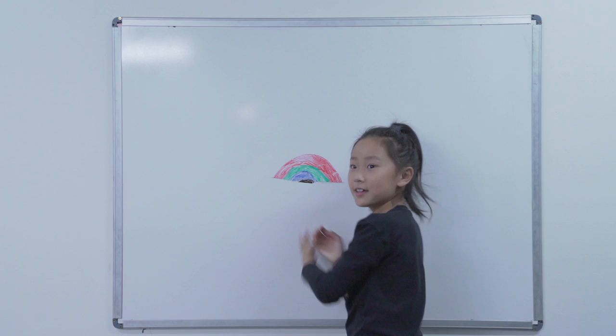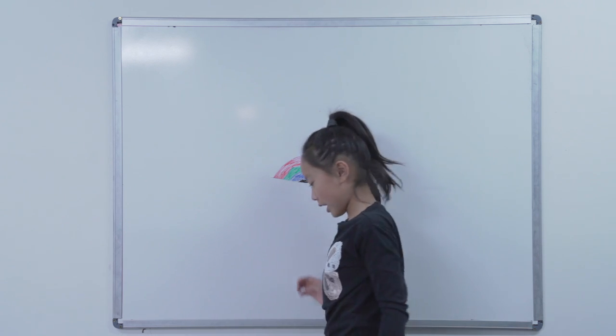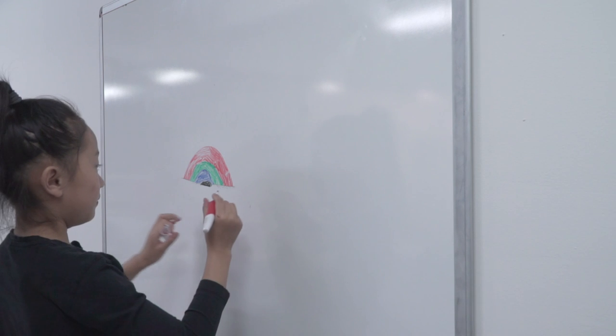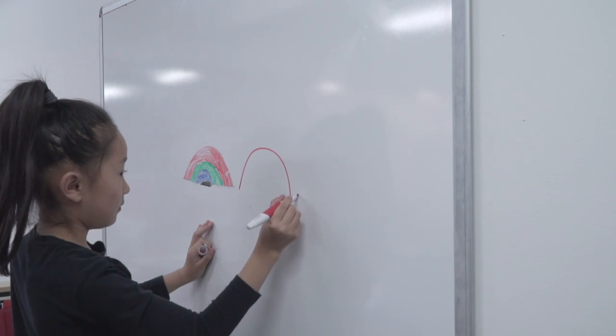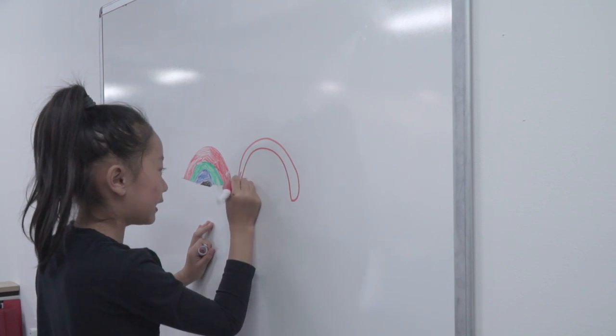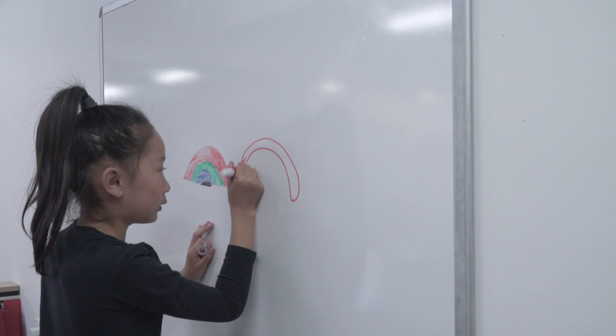Now, look at my fancy rainbow. I'm going to make it in my eye. Yeah, so I'm going to draw a lot of rainbow and then I'll show you how to make one good one.